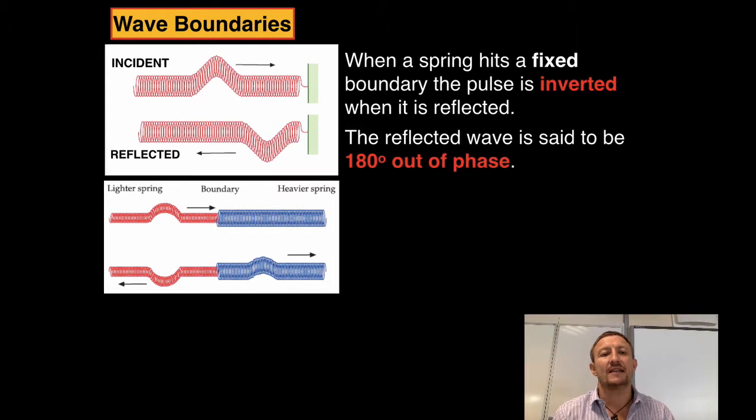Now what we find is that when the incident wave comes along from the lighter spring and hits the boundary surface, some of the energy which is generated by the wave is passed through the heavier spring. But instead of being inverted it carries on in its normal path. However the light spring then has the reflected wave which is bouncing off the heavy spring.